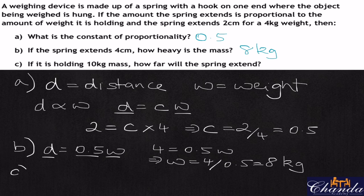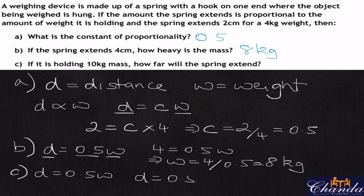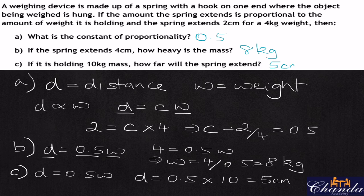Moving to part C: if it is holding 10 kilograms mass, how far will the spring extend? Again, D equals 0.5W, so D equals 0.5 times 10, which gives us 5 centimeters. So the spring will extend 5 centimeters.